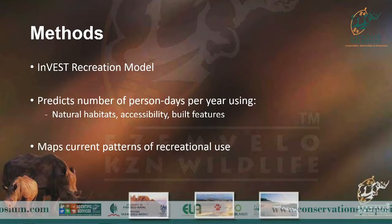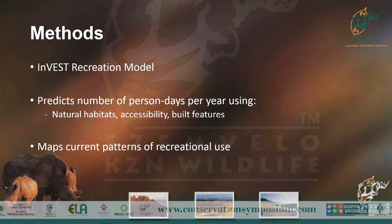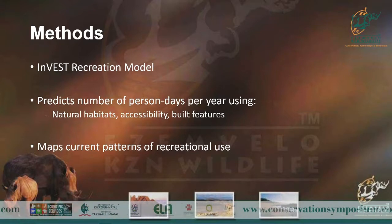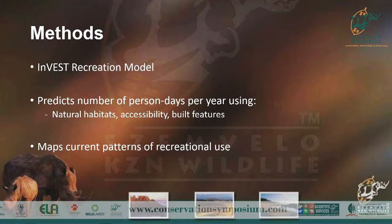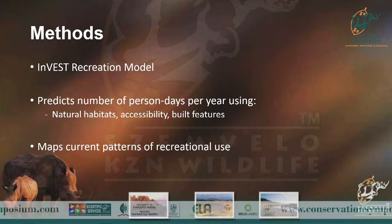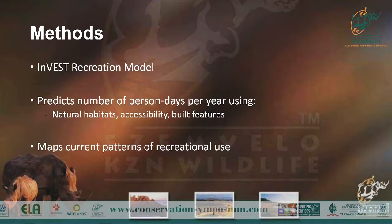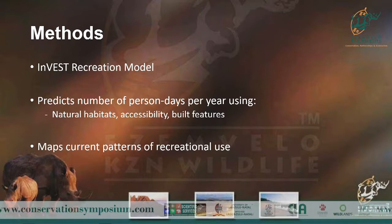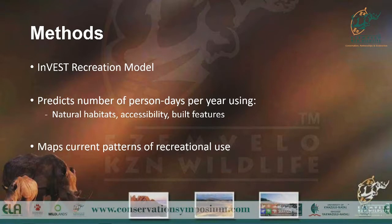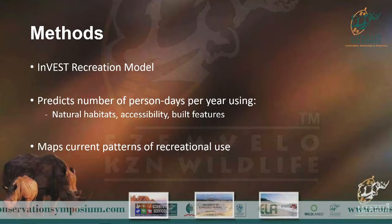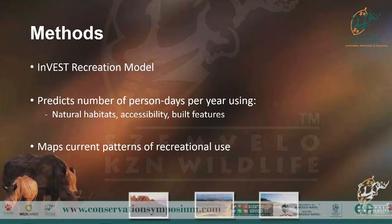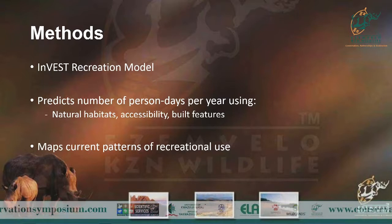Within the model there are sub-models that are fine-tuned: a recreational model, a water quality model, and a coastal quality model. For this specific study I used the recreational model. What the recreational model does is predict the number of person days visiting an area per year. It does this by using natural habitats, accessibility, and built features — whatever the user sees fit as factors driving people to visit a place.